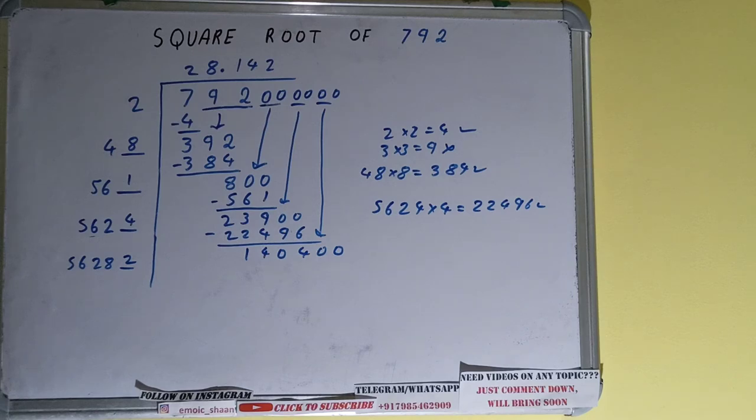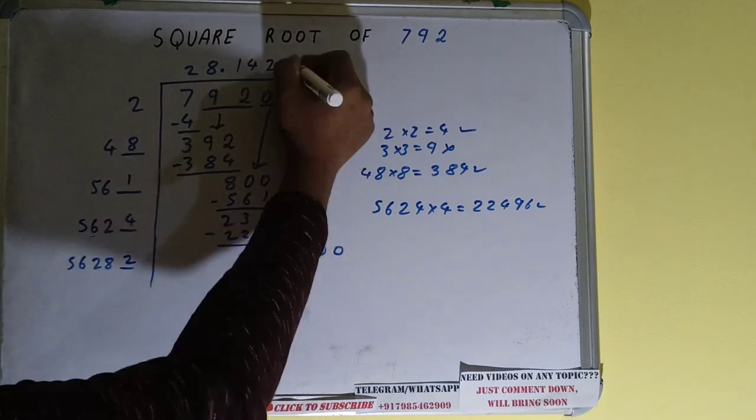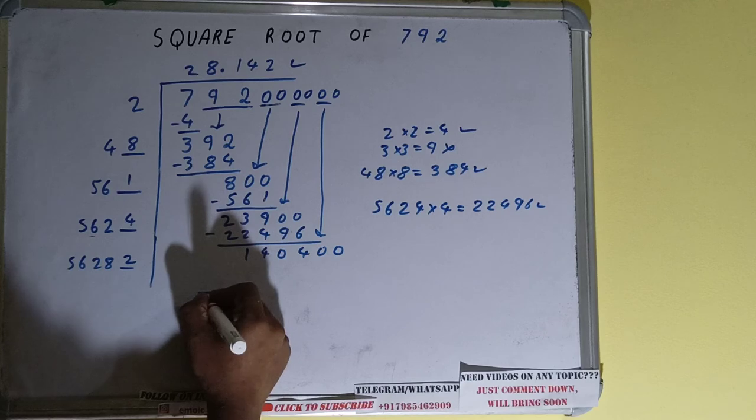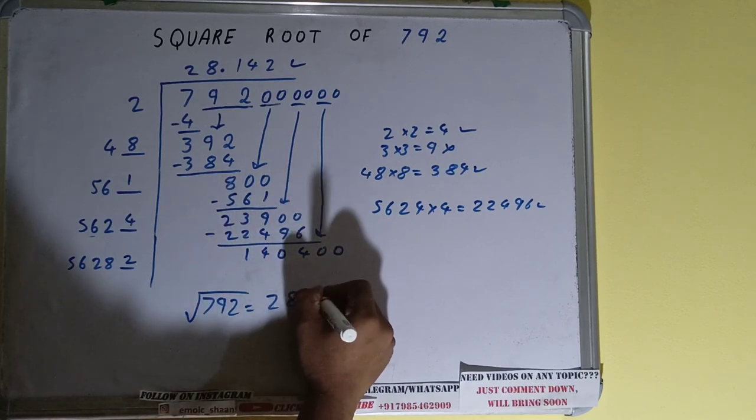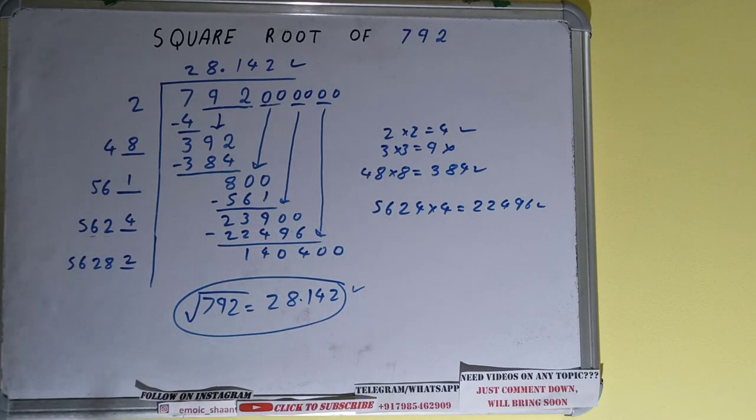So square root of 792 will be 28.142 and that would be the answer. So this is all. If you found the video helpful please do hit the like button, do consider subscribing, and thanks for watching.